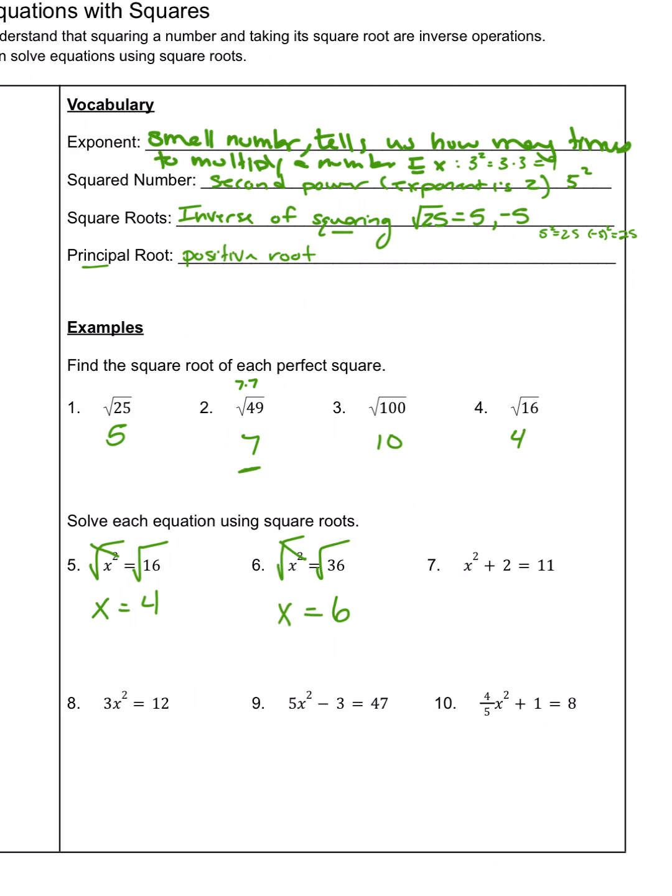Starting with the next one, we do still have the x squared, but it's not by itself yet. Before you can take the square root, you have to make sure that variable is by itself first. So we've got to get rid of this plus 2 by using inverse operations. So the inverse of plus 2 will be minus 2. Again, you've got to do the same thing on both sides. Because plus 2 and minus 2 make 0, so they cancel each other out. And 11 minus 2 is 9. And then I can take the square root of both sides, because those are inverses. And the square root of 9 is 3.